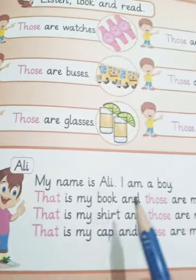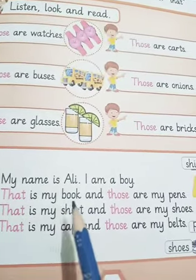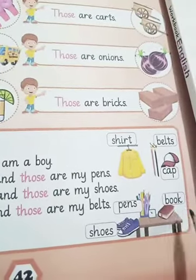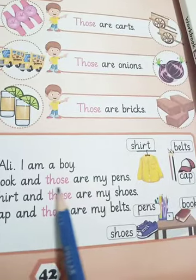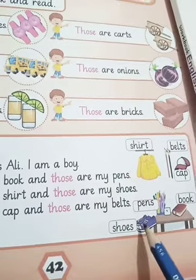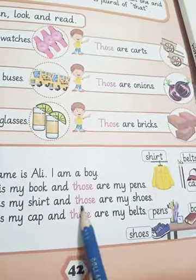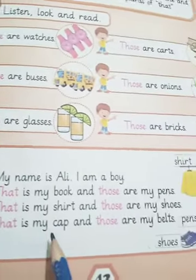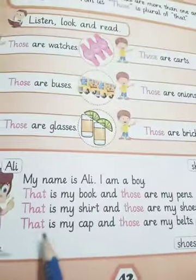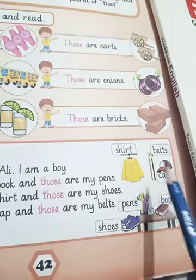See what Ali is saying: 'My name is Ali. I am a boy. That is my book' — book is singular, so Ali uses 'that'. 'Those are my pants' — pants are plural, so Ali uses 'those'. 'That is my shirt' — singular, so 'that'. 'Those are my shoes' — plural, so 'those'. 'That is my cap' — singular. 'Those are my belts' — belts are plural, so Ali uses 'those'.